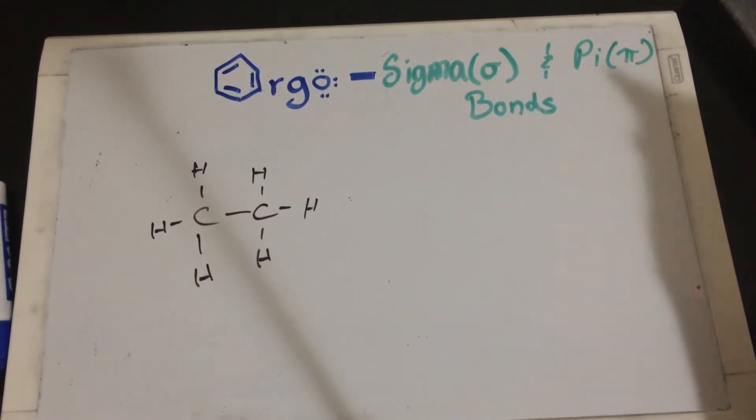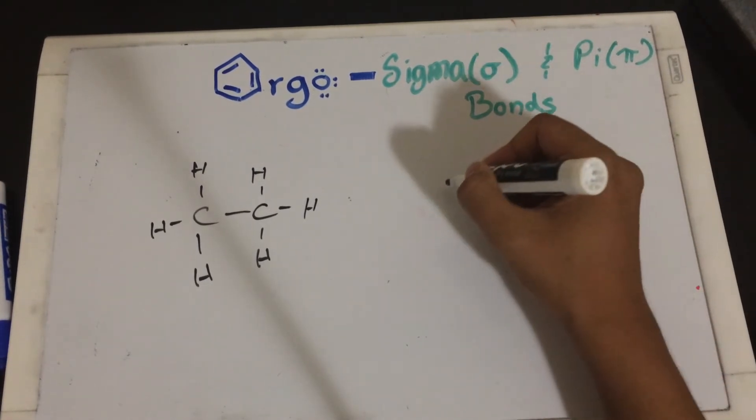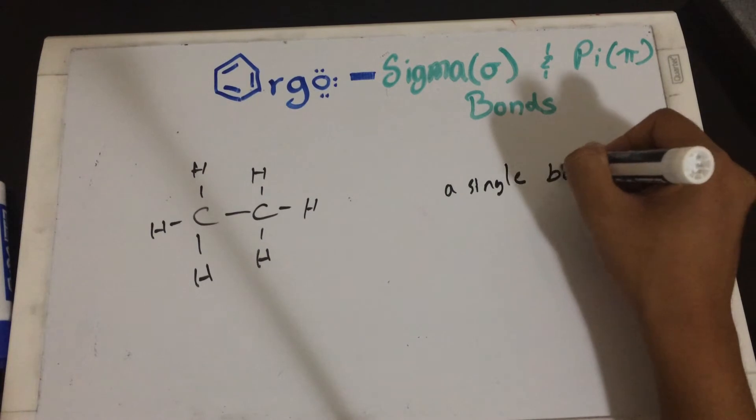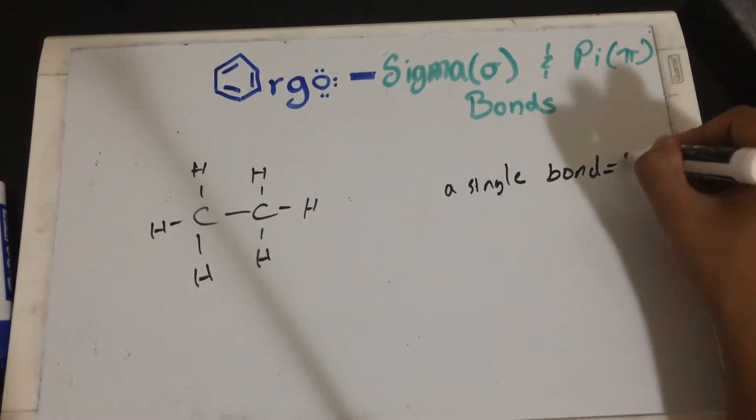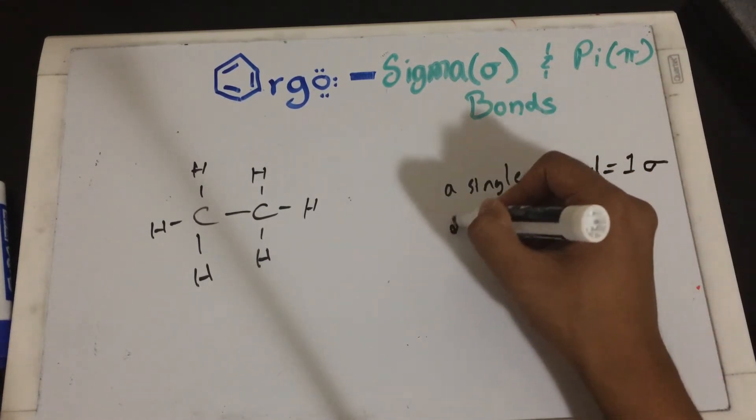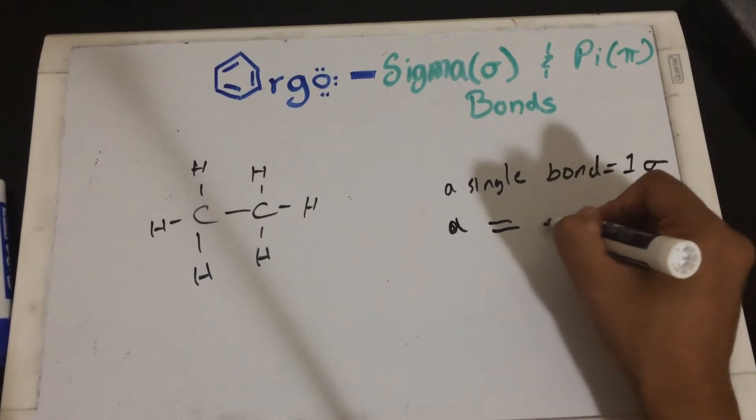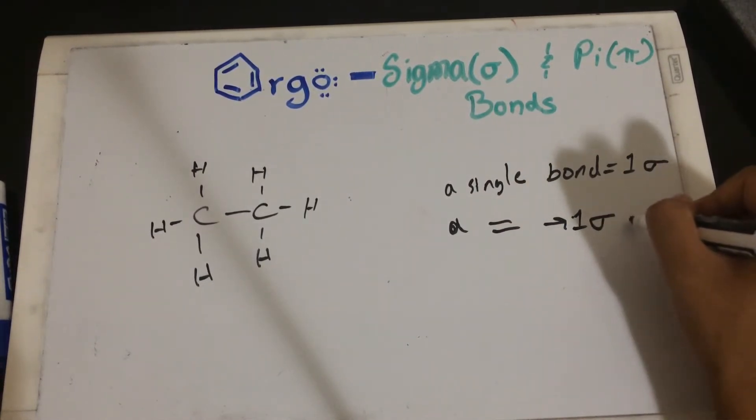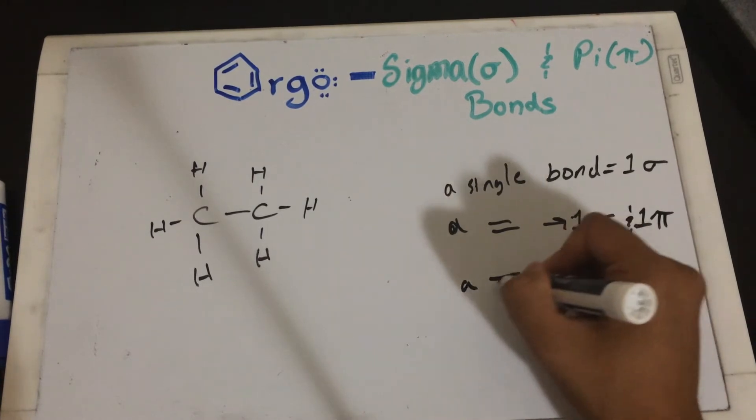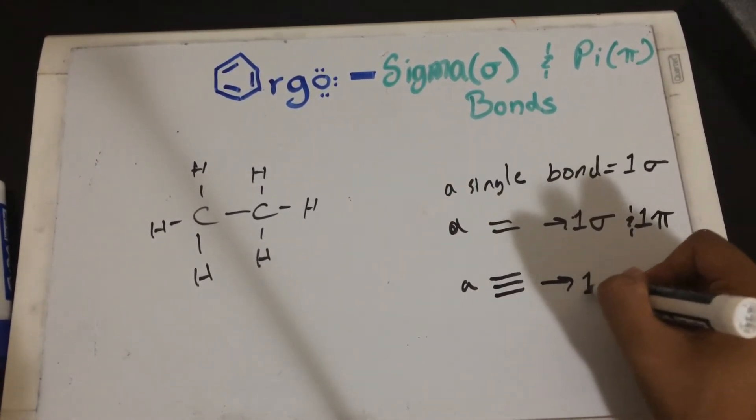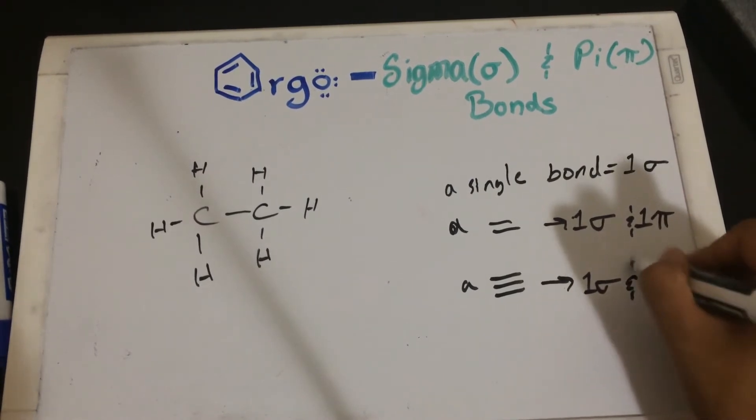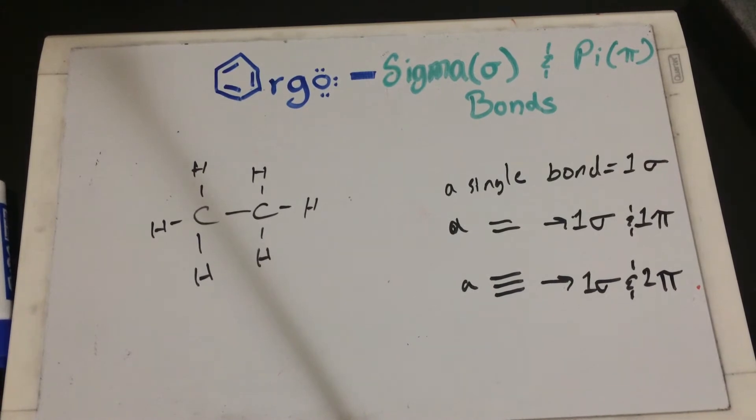Well, like I said, it's a fairly simple concept. A single bond equals one sigma bond. A double bond comprises of one sigma and one pi bond. And a triple bond comprises of one sigma and two pi bonds. So basically, anytime you see a single bond, you consider that as one sigma bond. And anything after that, you consider them as pi bonds.